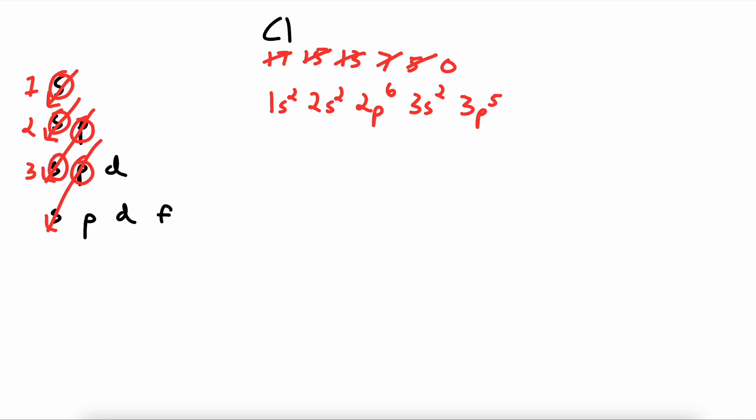Congrats, that's the first step done. Now let's draw it. To draw the electron configuration, we space out our electron notation. And then we draw in our orbitals.